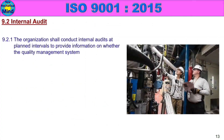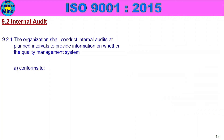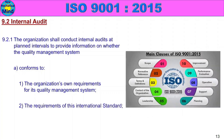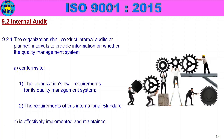9.2 Internal Audit. 9.2.1: The organization shall conduct internal audits at planned intervals to provide information on whether the quality management system conforms to the organization's own requirements for its quality management system and to the requirements of this international standard.